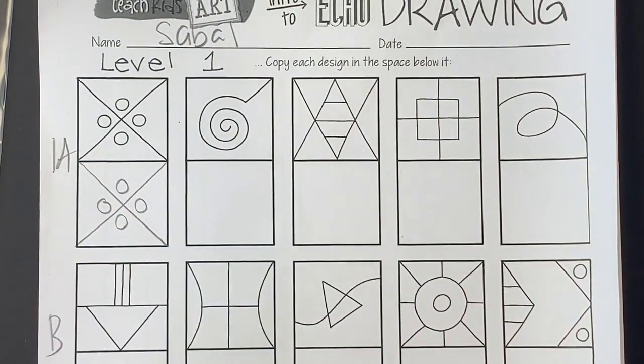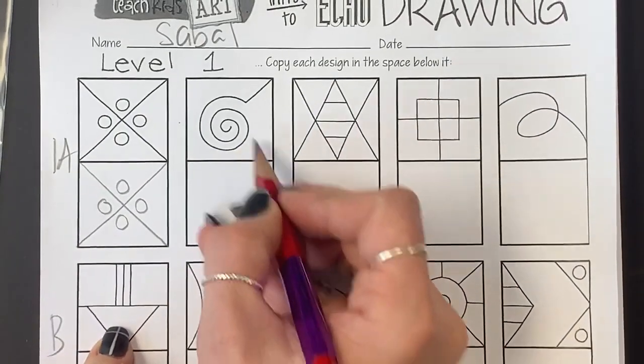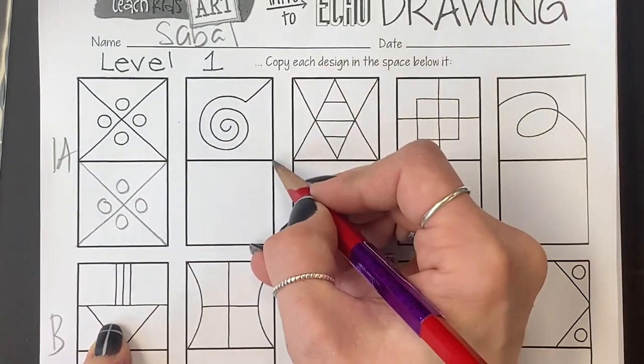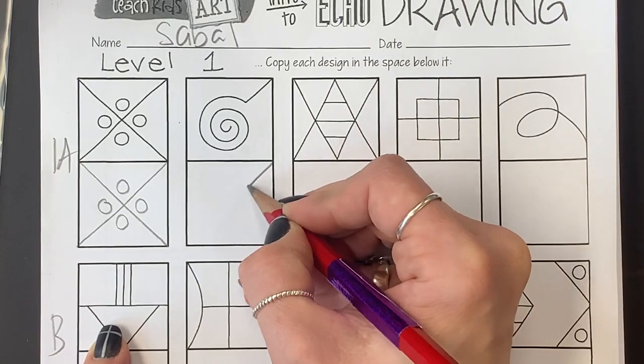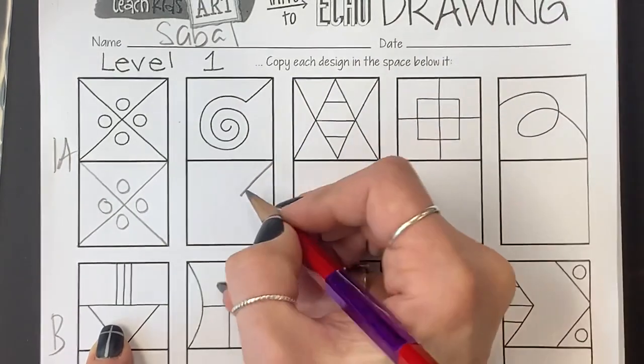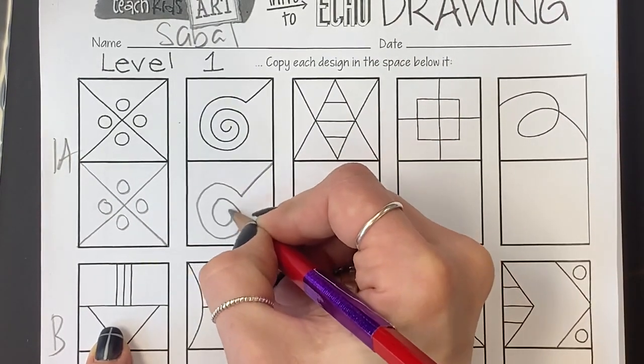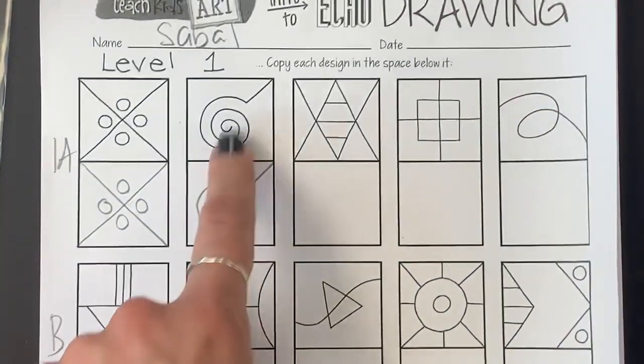Look, are any lines touching the four corners? Nope, nope, nope, yep. So, I'll go diagonal down a little bit and stop. And then a spiral. Done.